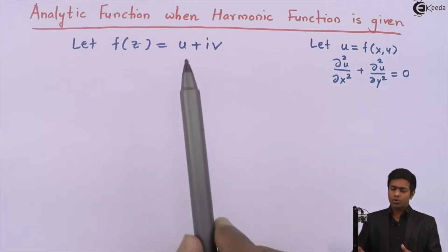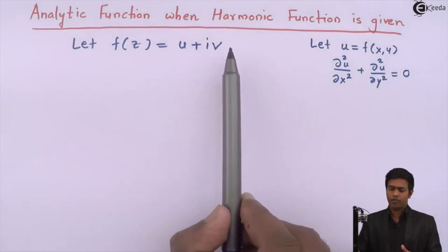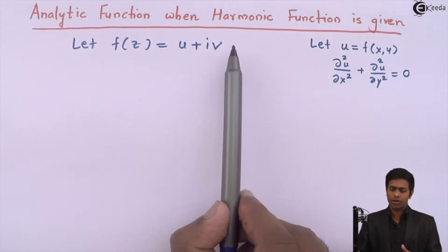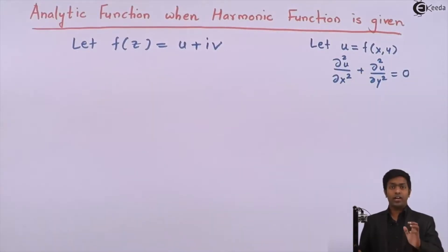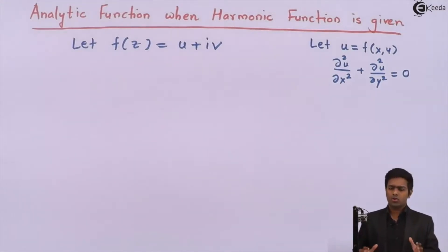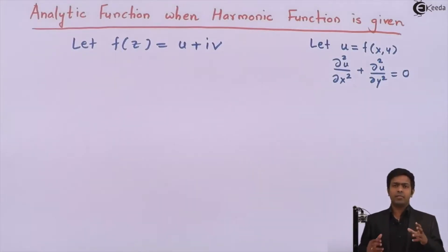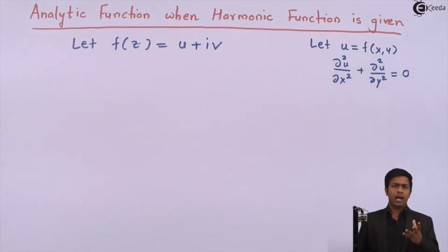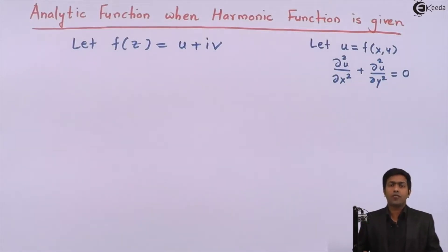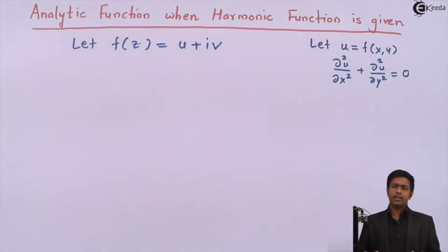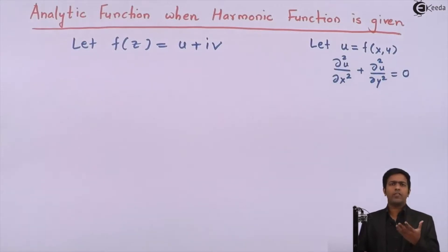u is the conjugate harmonic of v, and v is the conjugate harmonic of u. Now you understand the relationship between analytic functions and harmonic functions. In certain problems, you will be given the harmonic function — either u or v — and asked to find the corresponding analytic function.